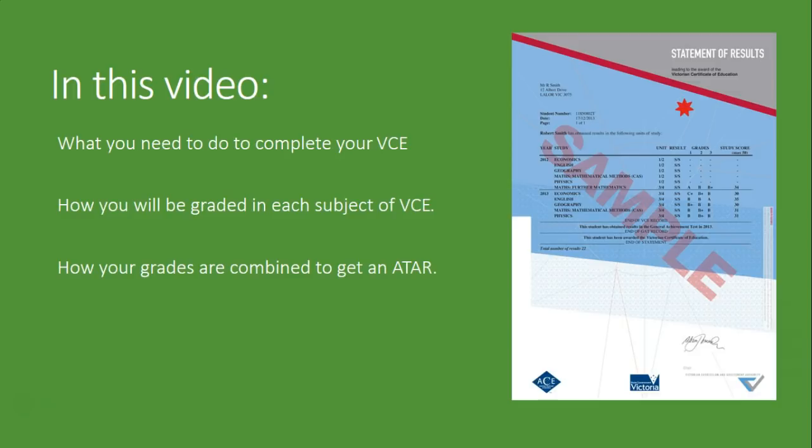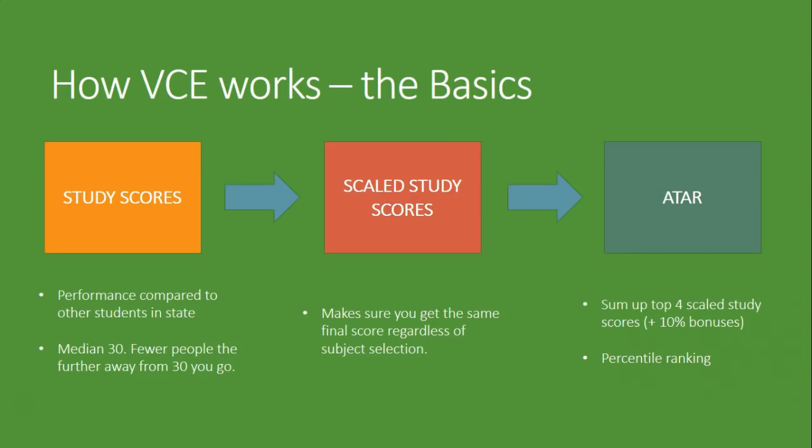The basics of how VCE works is that you do some work in subjects. Your performance in those subjects are compared to all the other students doing that subject. They're then compared to all the other students who didn't do that subject, so we scale those scores somehow to make more fair comparisons. Finally, an ATAR is where we add up all your scores across all your subjects, see where you sit within the overall ranking, and give you a percentile ranking.